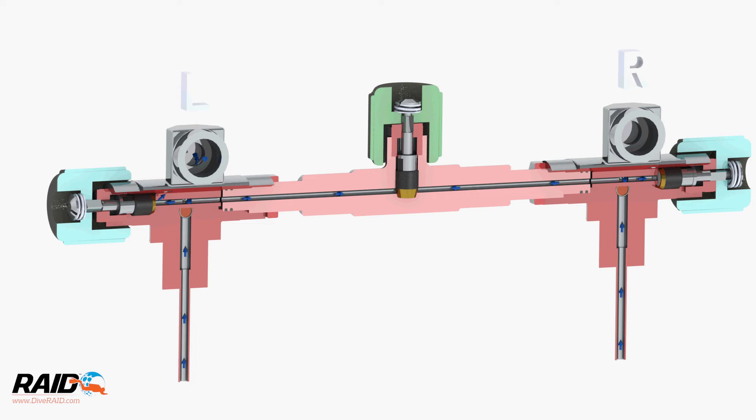Gas from the left cylinder can only go to the left post, and the same is true for the right cylinder, only feeding to the right post.